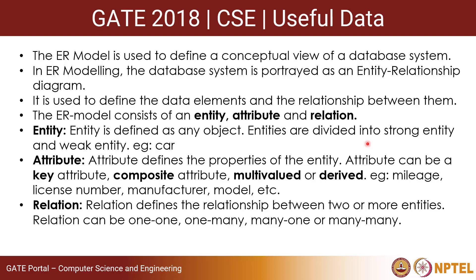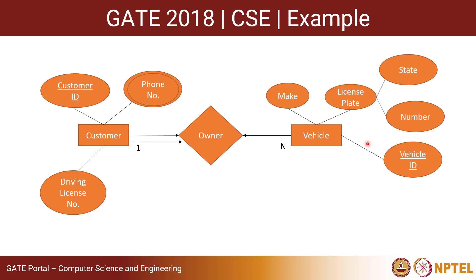A relation defines a relationship between two or more entities. A relation can be either one-to-one, one-to-many, many-to-one, or many-to-many. To understand all this theory, let us look at an example. Given this ER diagram, we have something called a vehicle. A vehicle or car is an object — this is an entity.